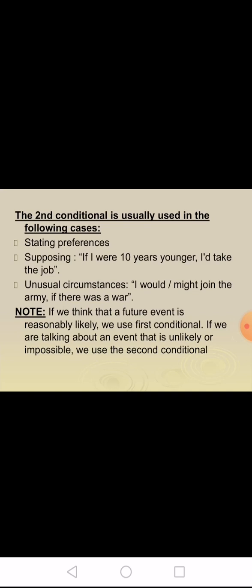In the third sentence, we are talking about a possible event in the future, but by using the second conditional we make it clear that we don't really think it will happen. The second conditional is used for stating preferences and unusual circumstances. For example: if I were 10 years younger, I would take the job. Or: I would join the army if there was a war. Note: if a future event is reasonably likely, use the first conditional; if it is unlikely or impossible, use the second conditional. Thank you and goodbye.